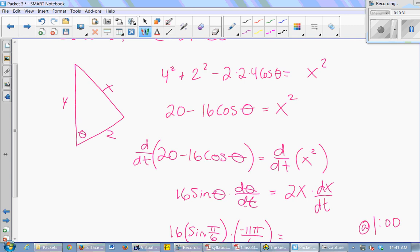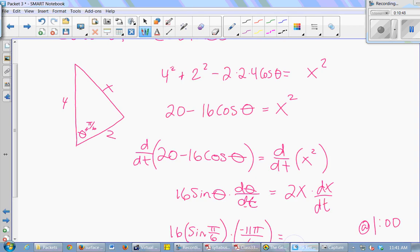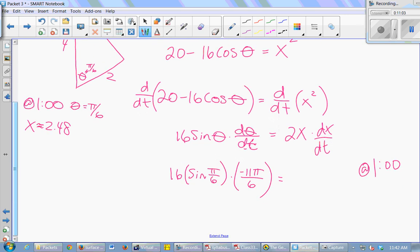I'm going to have to use the law of cosines. I'm going to have to figure it out. I'm going to make a theta, make my theta π/6, solve for the x. And I'm just going to tell you what it is, because we're running out of time. At 1 o'clock, theta is π/6, and x is 2.48, approximately. So then I can plug that in. 2 times 2.48 times dx/dt, and just solve for dx/dt.